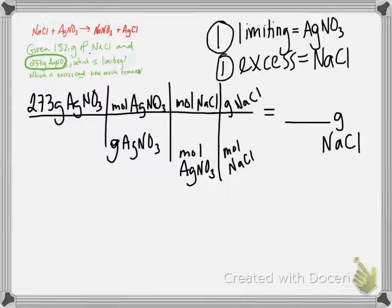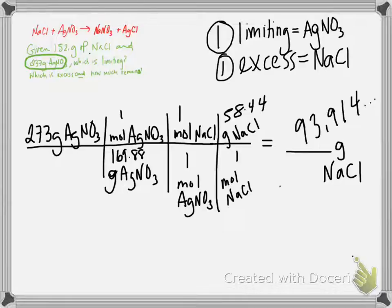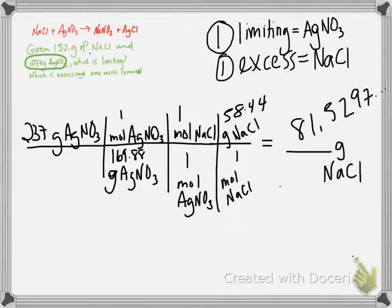We're doing the same kind of factor label we did, only backwards. Grams silver nitrate, moles silver nitrate, because to compare those two chemicals we'll have to be in a mole ratio. Then we can get to our mole ratio, moles silver nitrate to moles sodium chloride. At that point, we can do our final conversion from moles of sodium chloride to grams of sodium chloride. Now we just have to plug in some values. When I get a limiting and excess problem, the very first thing I do is calculate the molar masses for both reactants, because I know I'm going to use both of them a couple of times. One mole of sodium nitrate was 169.88 grams. The mole ratio is one to one. And one mole of sodium chloride is 58.44 grams. I put 237 instead of 273. So we got 81.52 grams of sodium chloride.